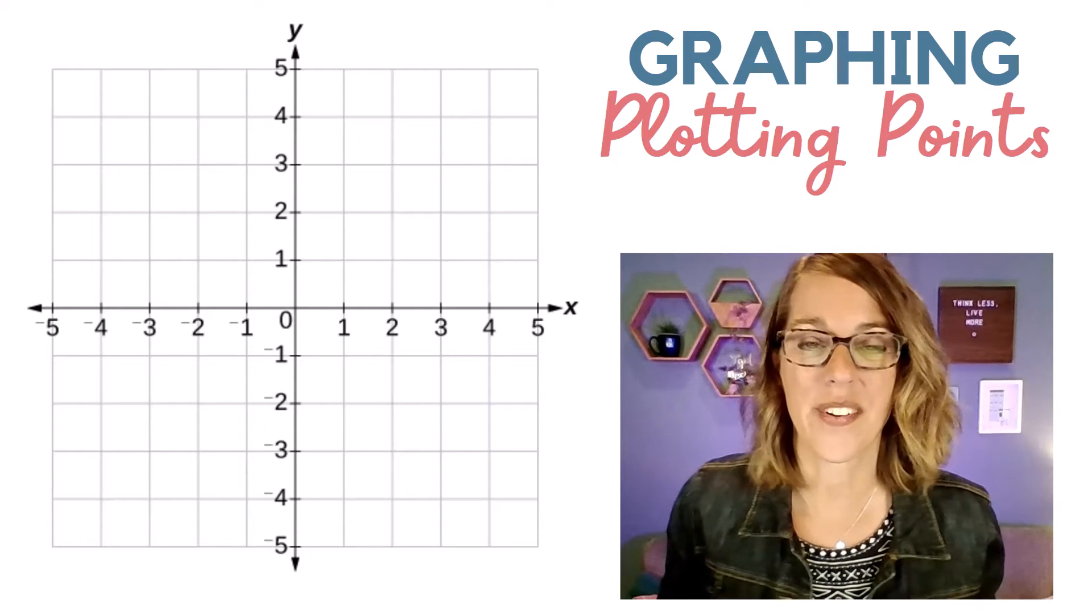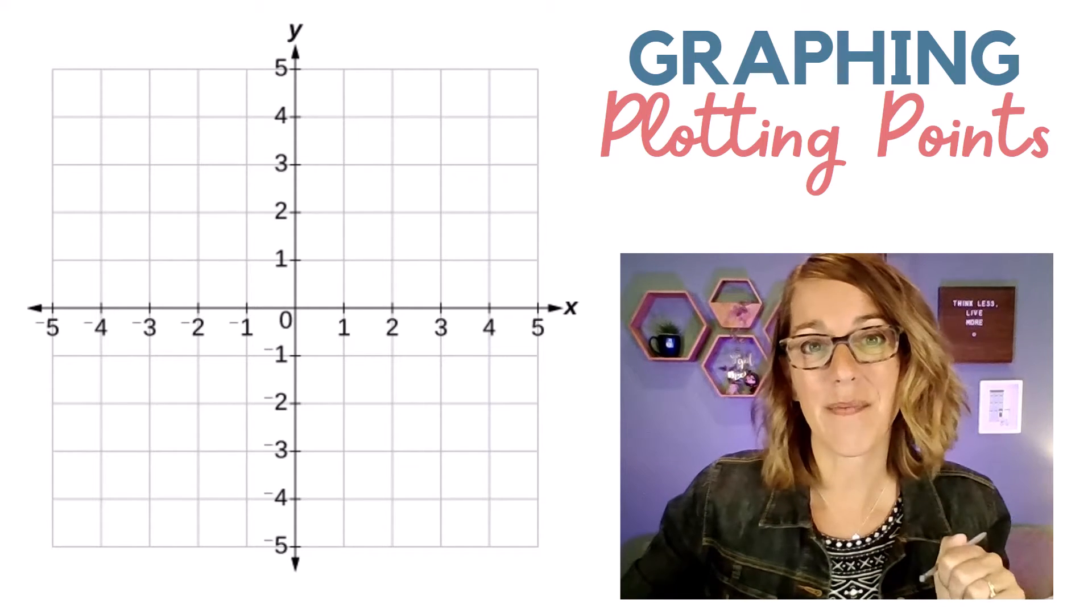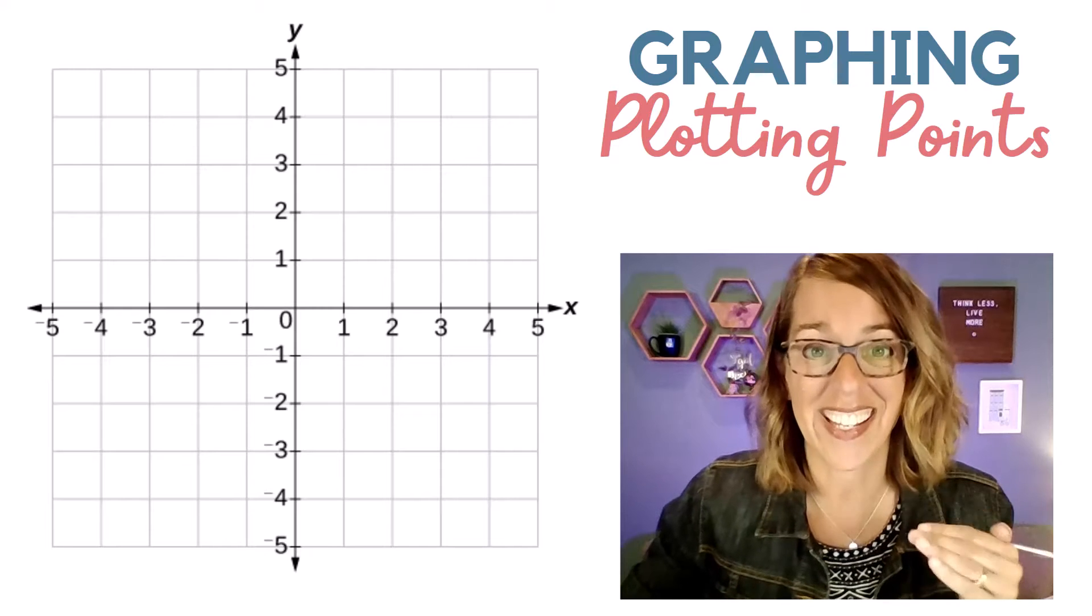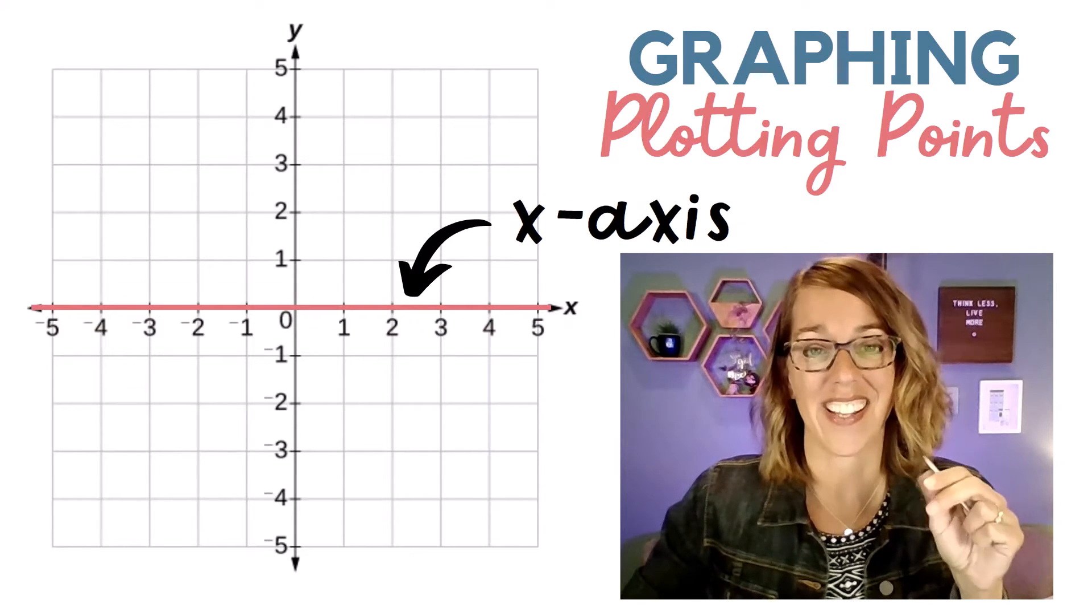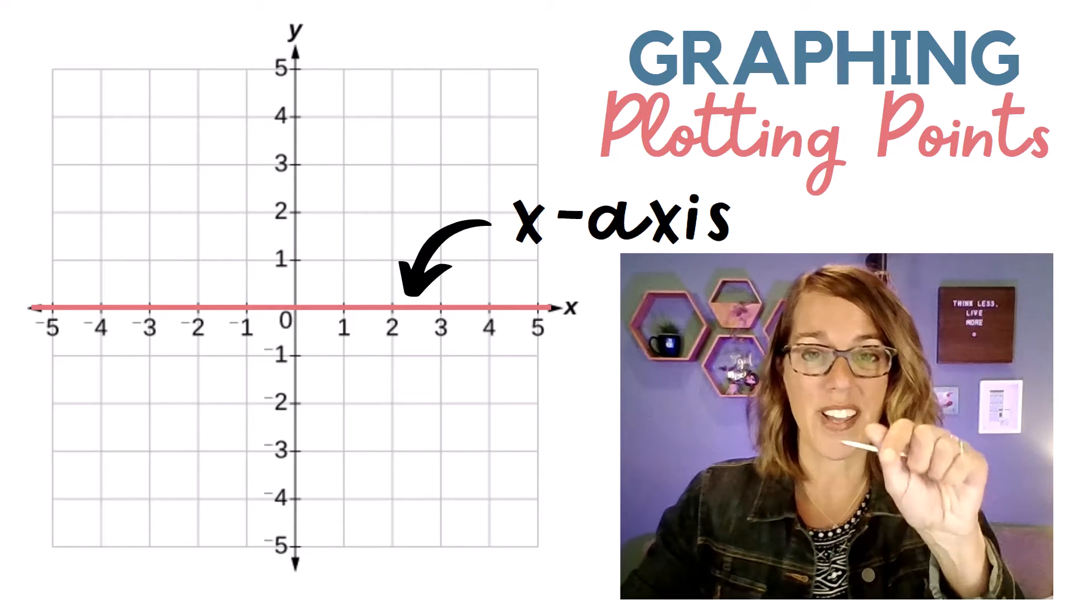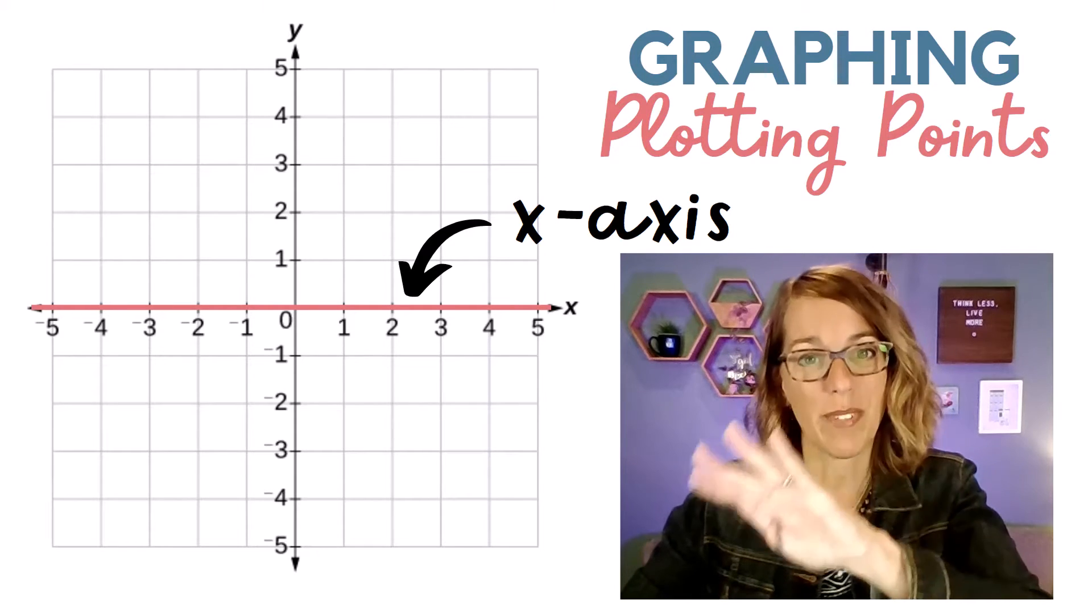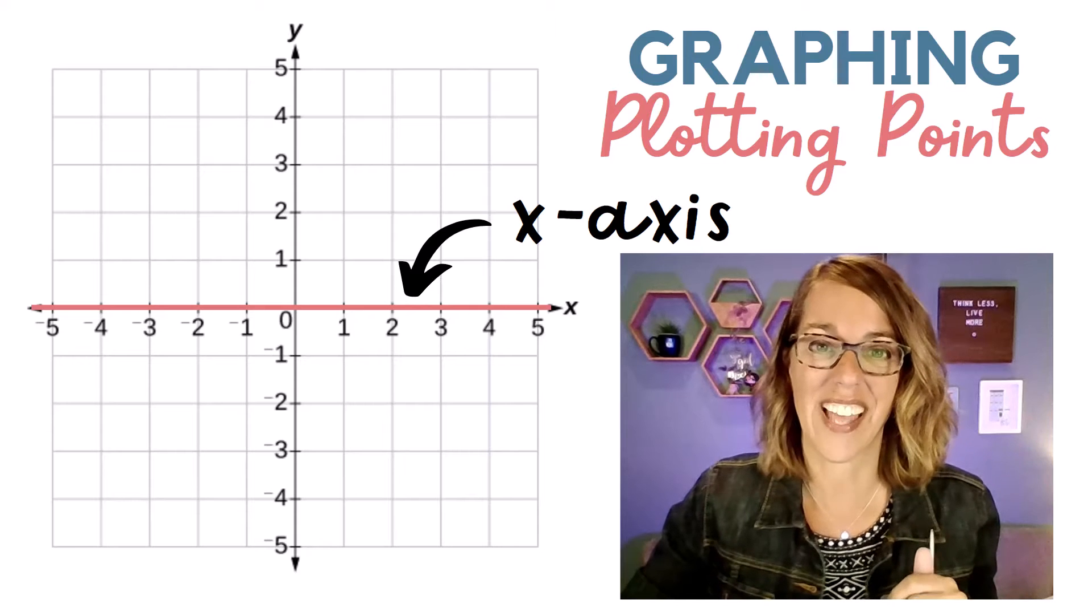Let's plot some points in the XY coordinate system. Our coordinate system is made up of two axes, which are just number lines. The first one is our X-axis, the horizontal one. Notice zero is in the middle, then plus on the right, negative on the left.